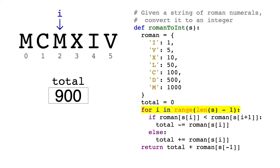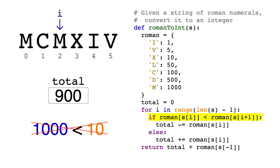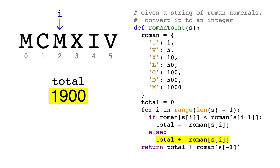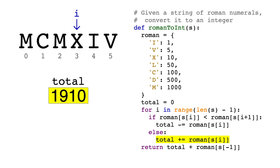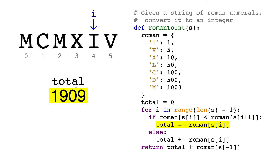Moving on, the next character is M, which again corresponds to 1000. The character after it is X, which corresponds to 10. Now we ask: is 1000 less than 10? This is false, so we can just add 1000 to our total. Next we'll compare X, which is 10, to I, which is 1. 10 is not less than 1, so we just add 10. Next is Roman numeral I, and we'll compare that to V, which is 5. Now 1 is less than 5, so we'll have to subtract 1. At this point, we've reached the end of our loop. For this last line, we'll just return the total plus the value of the last character.